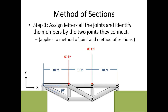Step one is to assign letters to all the joints you identify. Here we have A, B, C, D, E, and F, each joint identified by a single letter. The members are identified by the two joints they connect — so member AB, member AC, member BC, and so on.